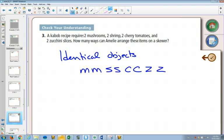So normally it would be 2, 4, 6, 8 factorial, but you have to divide by 2 factorial for the M's, 2 factorial for the S's, 2 factorial for the C's, and 2 factorial for the Z's.